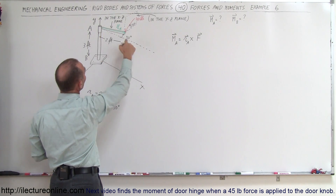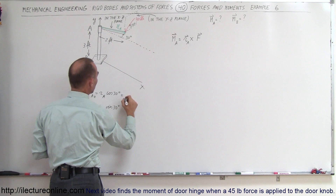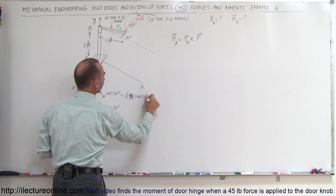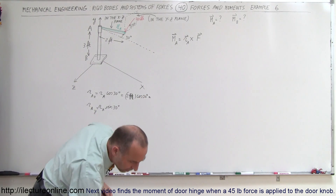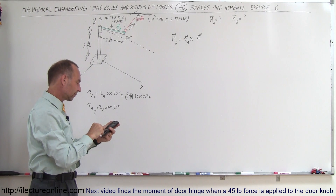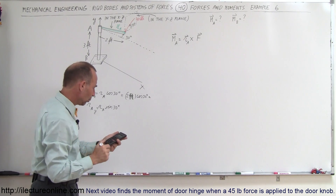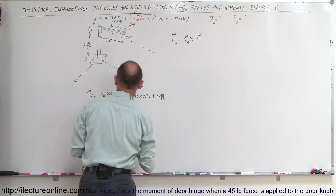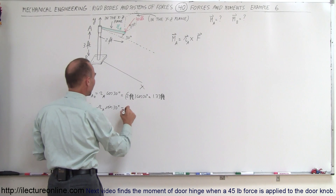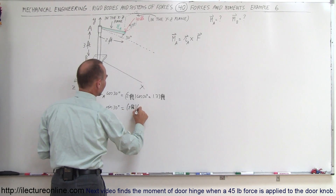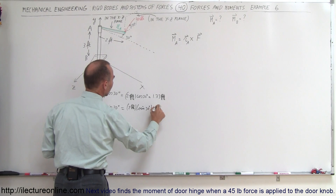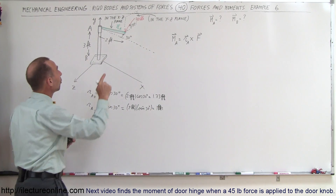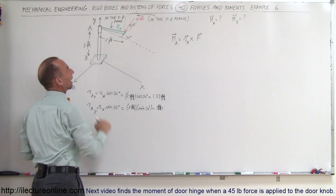R sub A is 2 feet, so the x component is 2 feet times cosine of 30 degrees, which gives 1.73 feet. The z component is 2 feet times sine of 30 degrees, which equals 1 foot. Those are the x and z components of the position vector relative to A, pointing to where the force is acting. Note: the units should be feet throughout.